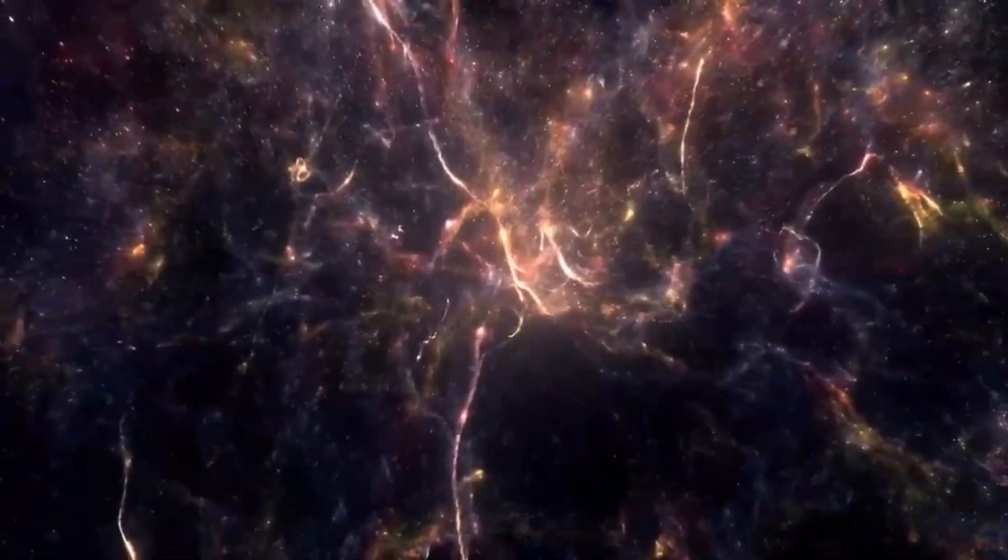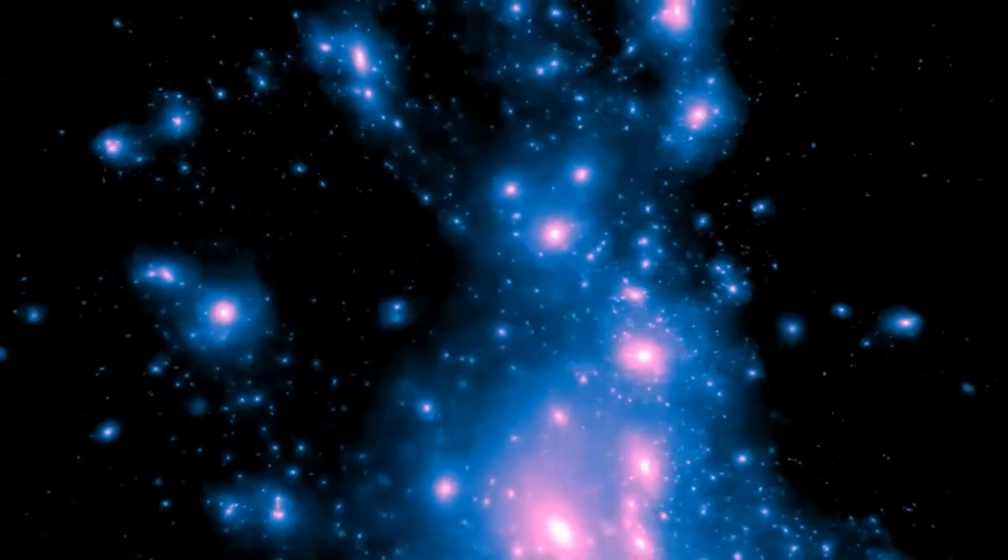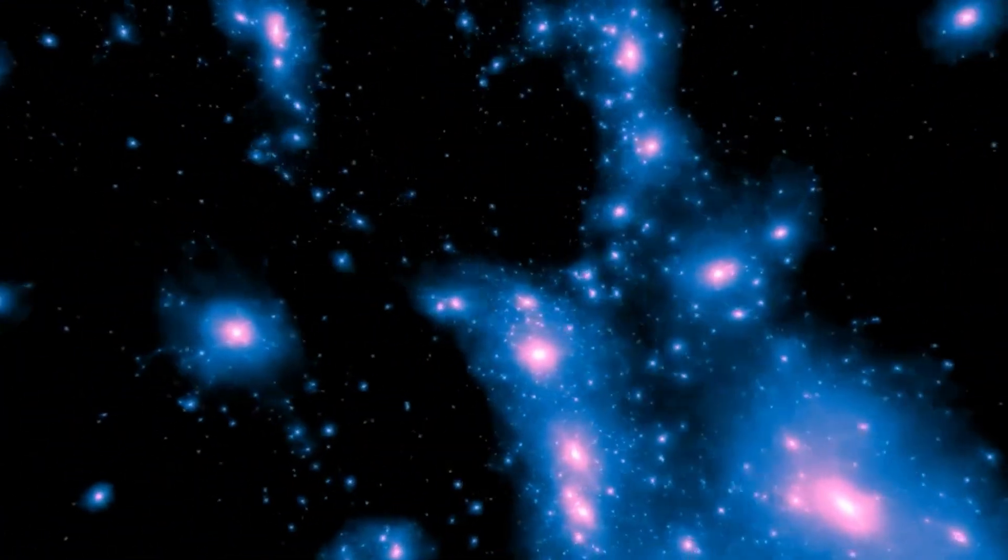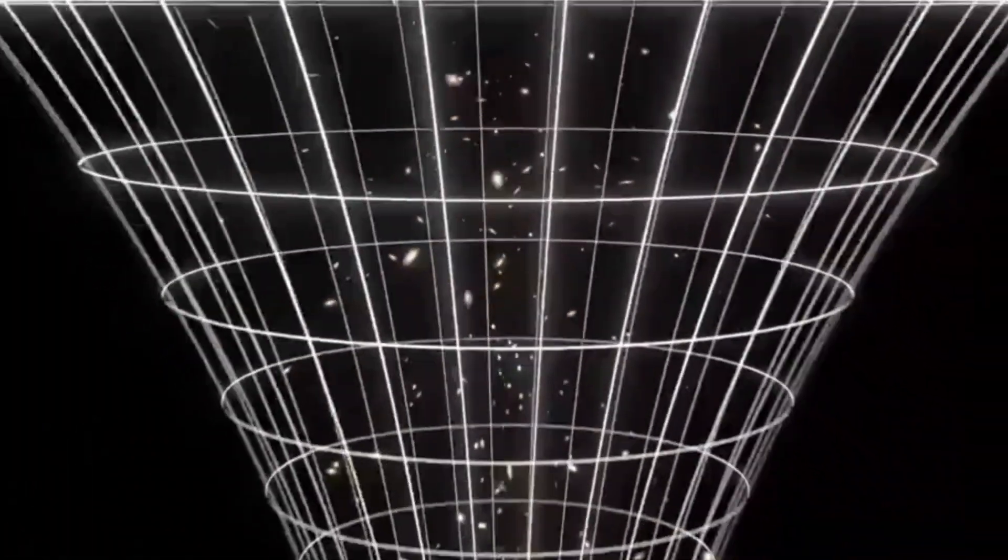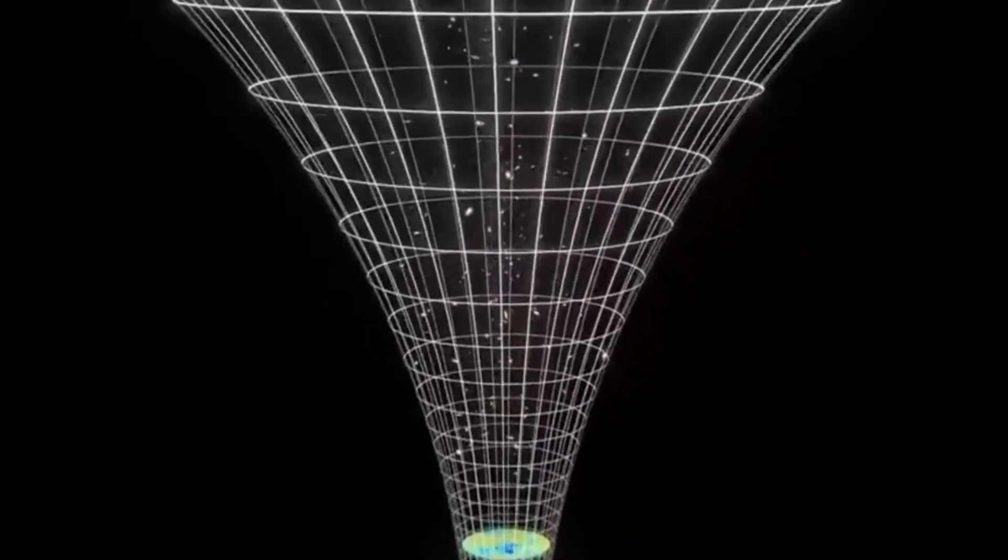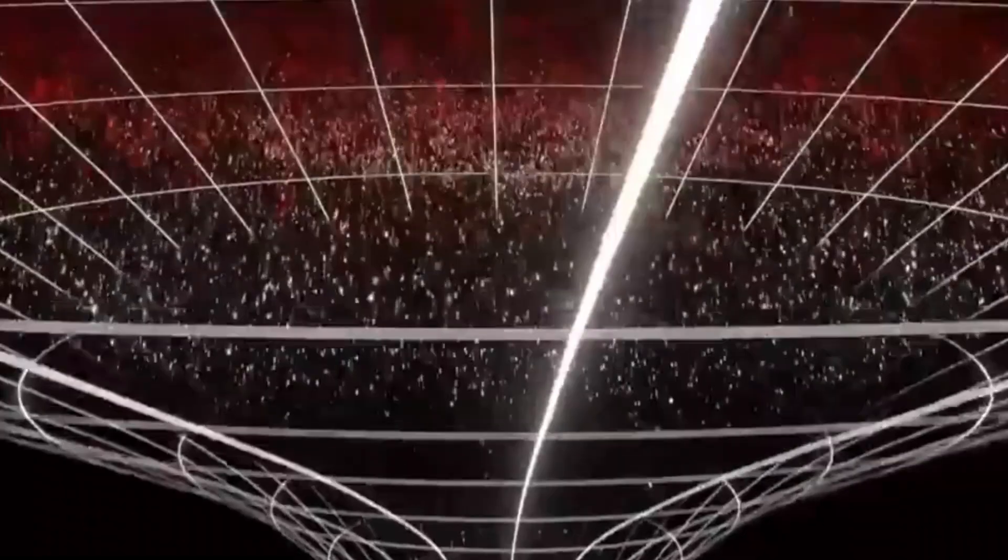One such theory is the cyclic universe model, suggesting that our cosmos is part of an eternal cycle involving expansion, contraction, and rebirth. Another alternative is the ekpyrotic universe model, which proposes that our universe emerged from the collision of higher dimensional brane worlds. These theories provide fresh perspectives on the formation of early galaxies and cosmic structures.